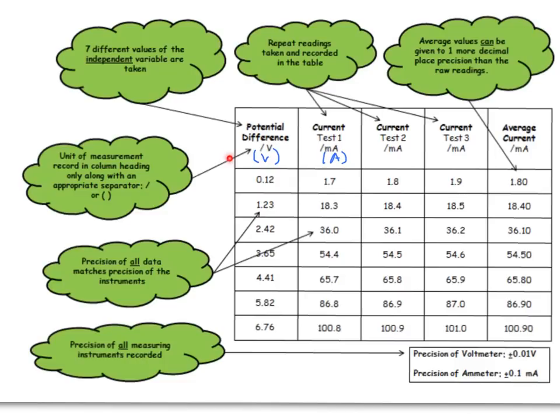Looking down your column here, the examiner should be able to see seven rows of data. One, two, three, four, five, six, seven, which makes it a valid experiment. You need to show that you've changed the independent variable seven times.